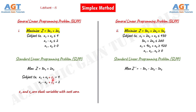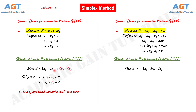Since we have introduced the slack variables s1 and s2 in our equations, we also have to write them in the objective function. So in the objective function we add 0·s1 plus 0·s2, since the cost of slack variables is 0. This is how to introduce slack variables.